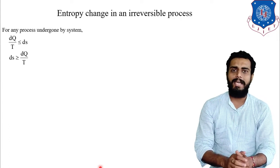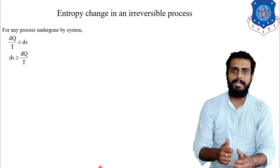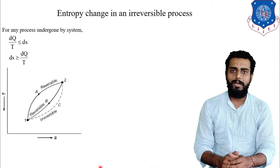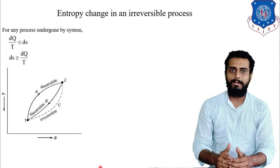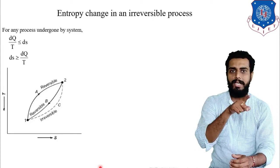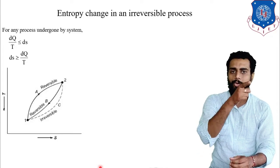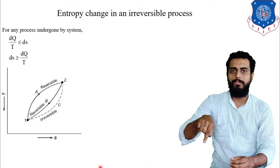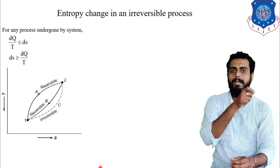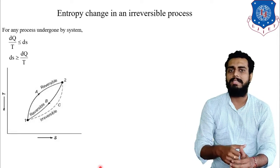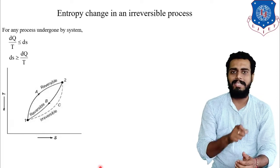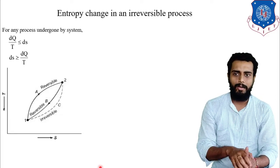Now let us plot one diagram. On the y-axis we are taking temperature and on the x-axis we are taking entropy. Here you can observe that from point 1 to point 2, we are following path A — an irreversible path. From 2 to 1 we are following the reversible path B. We also have another path C shown by a dotted line, which is irreversible.